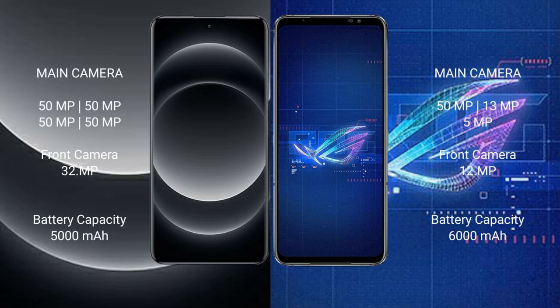Xiaomi 14 Ultra features a rear quad camera setup: 50MP plus 50MP plus 50MP plus 50MP, and a front camera of 32MP. Asus ROG Phone 6 features a rear triple camera setup: 50MP plus 30MP plus 5MP, and a front camera of 12MP.